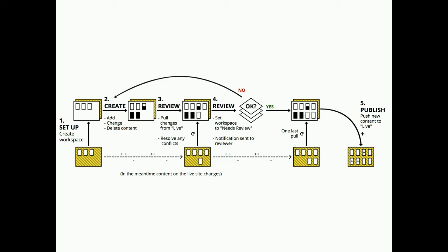One scenario could look something like this. Starting at the very left — we want to make a change. The first step is that you will create a new workspace. In this new workspace, step two will be to create, change, or delete content, making your changes. Third step would be to review those changes. Before the review, you probably want to pull in updates from the live or upstream workspace, just so that you have a fresh copy of everything. You pull in those updates, potentially resolving any conflicts, because there might be conflicting changes going on in the upstream workspace. Once that's done, you can go through the review of the entire workspace — not thinking about individual pieces of content. If you pass the review, you can do one last pull from the upstream workspace, and then publish your whole change set.